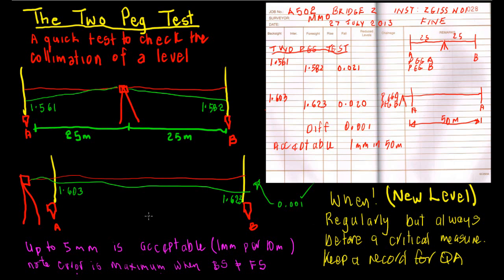Don't forget to keep your records for QA purposes. Very important that you can track back to when a level was reading fine and then perhaps not so fine, and good to know what jobs you perhaps need to just have a closer look at if that's the case. So there you go, the two peg test.